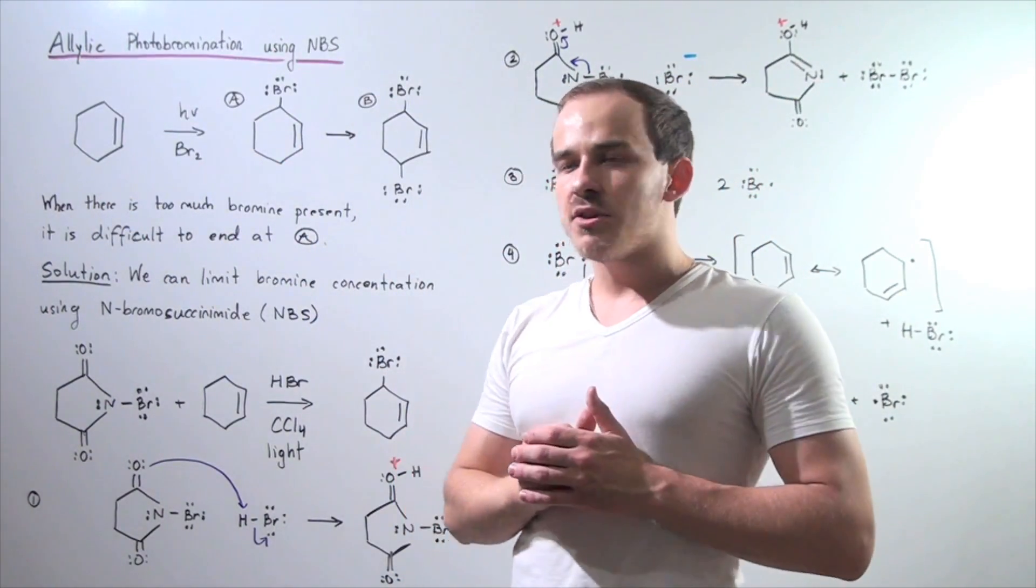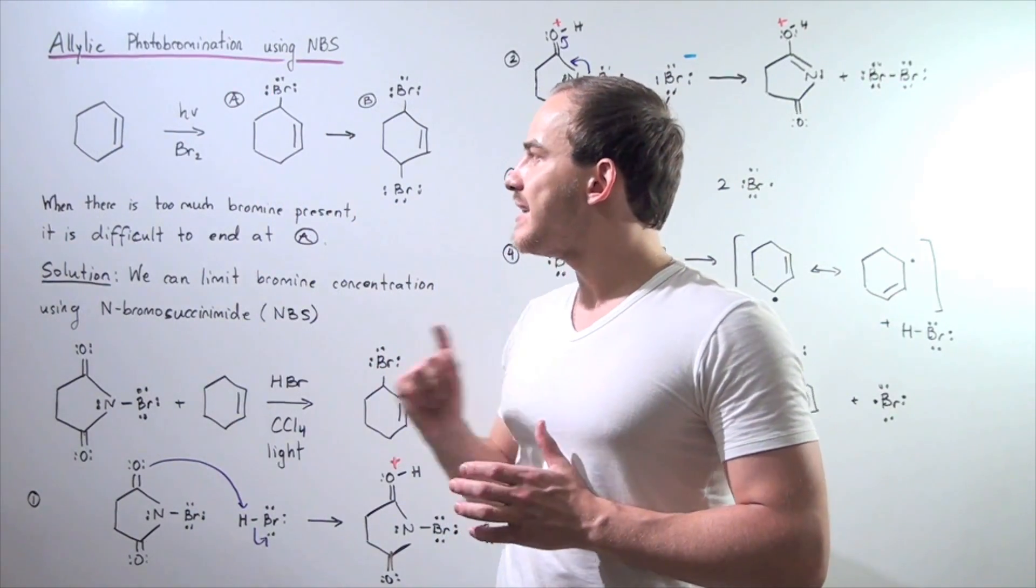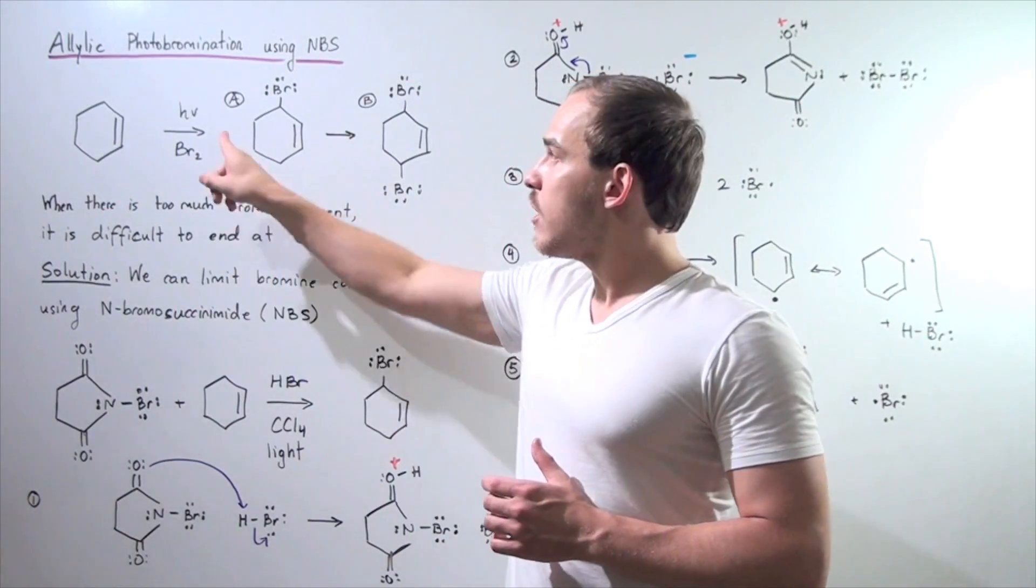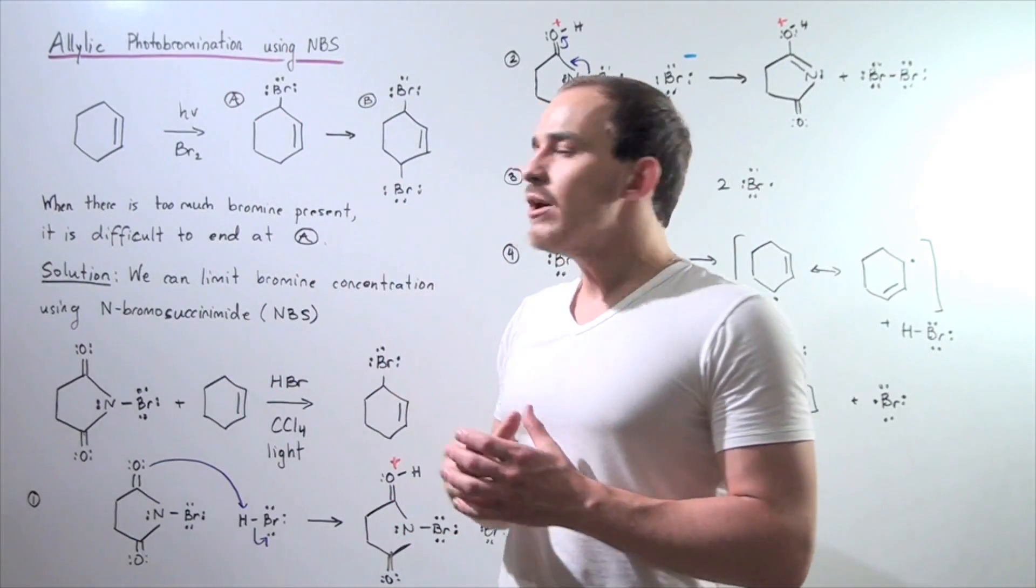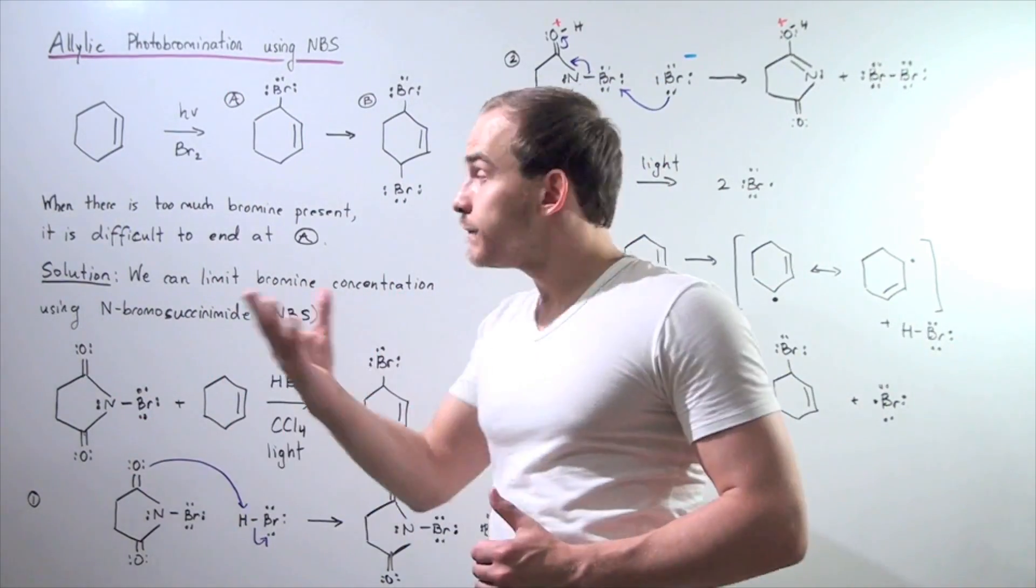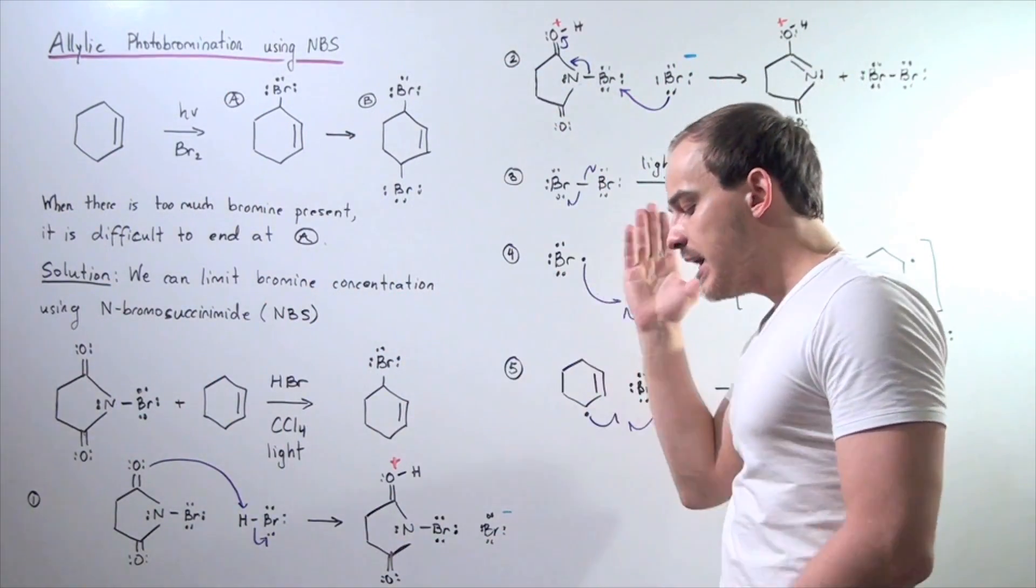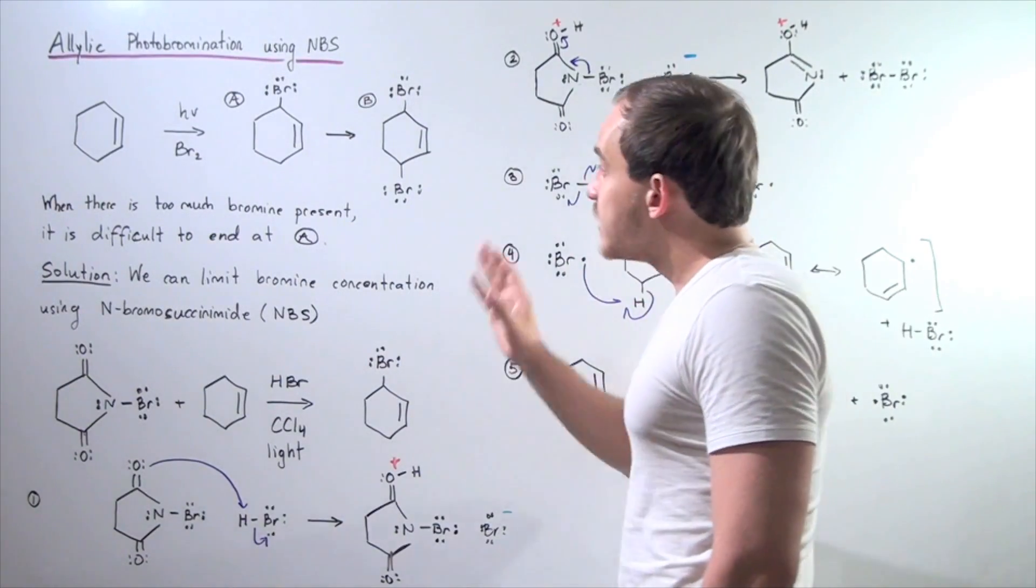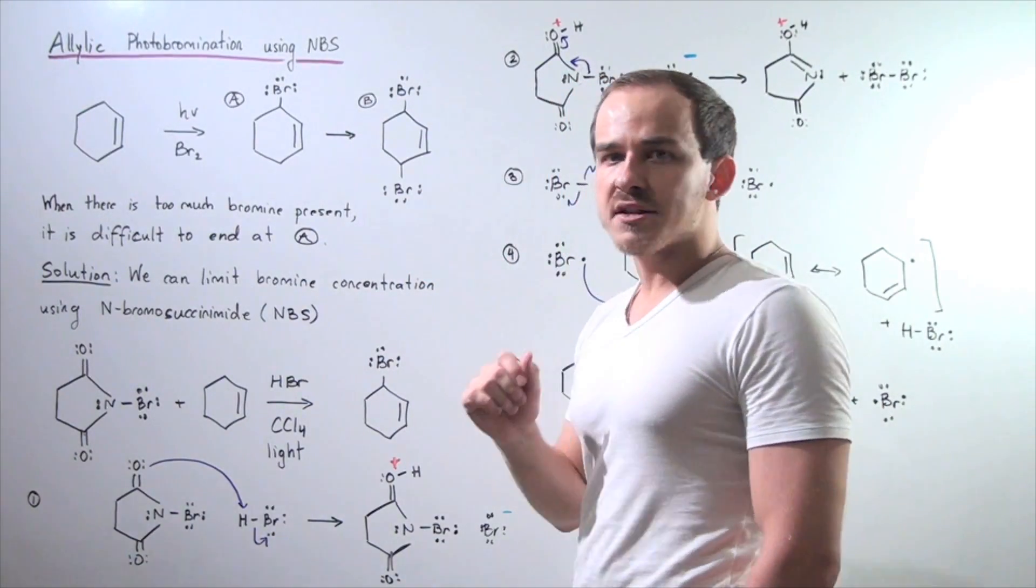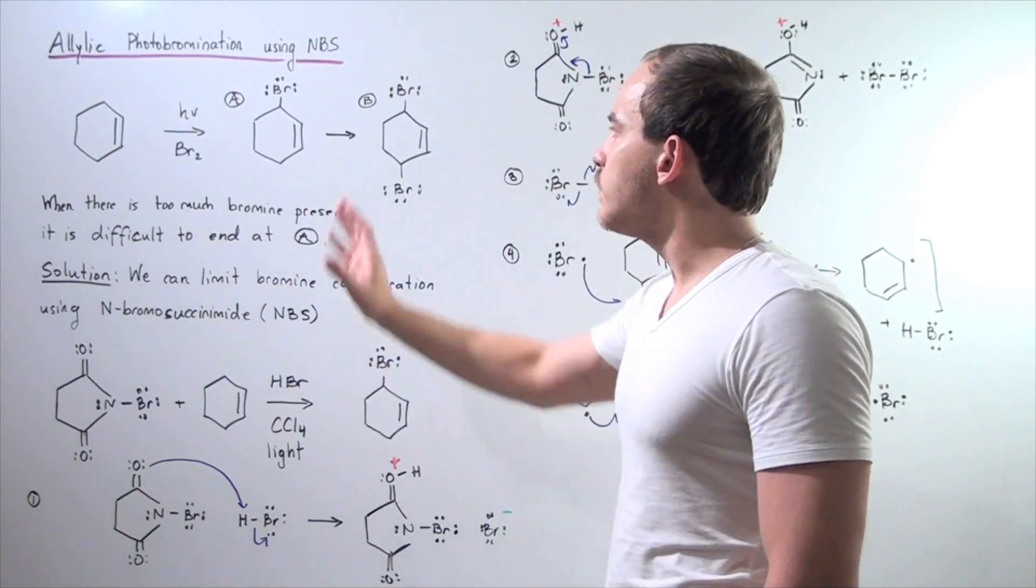The only problem with using these reagents is that when there's too much of this Br2, our product A will easily convert to our product B, a dihalide. Suppose we don't want product B. Suppose we only want product A.